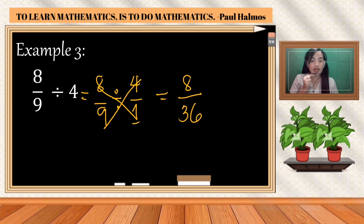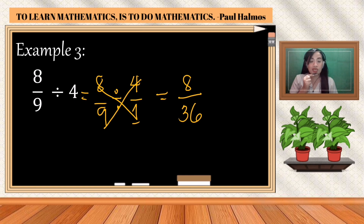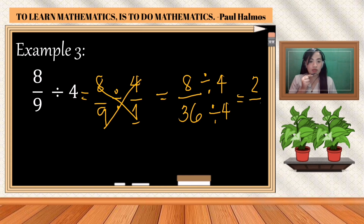Our answer is eight over thirty-six. Is this the final answer? No, because eight and thirty-six have a common factor of four. Divide eight by four and thirty-six by four: eight divided by four is two, and thirty-six divided by four is nine. The final answer is two over nine.